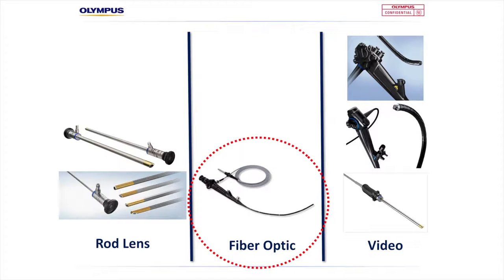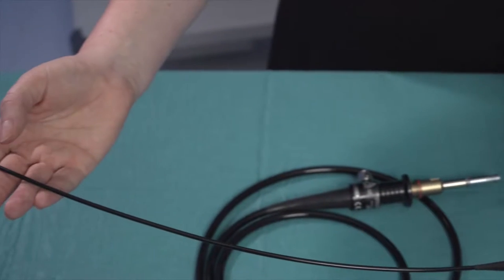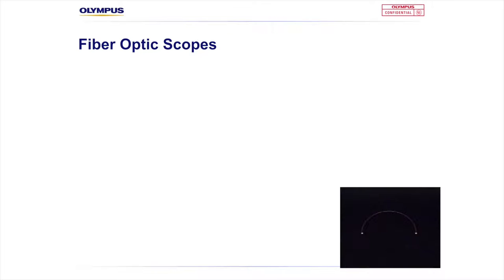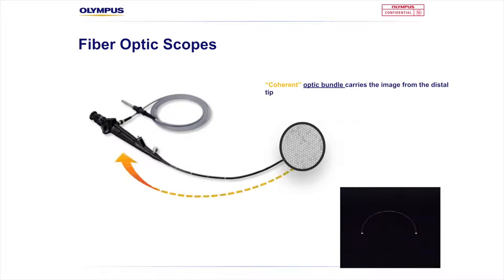A rod lens or rigid telescope might not be suitable to access these cavities during more minor procedures, especially where heavy anaesthetic is not warranted. This brings me to the second type of scope: fibre optic. Fibre optic endoscopes allow clinicians to use a flexible instrument to navigate and view patient tissues. Fibre optic scopes use a fibre optic bundle to transport the image instead of rod lenses. This fibre optic bundle is different from the bundle that carries light in light guides — it carries the image in fibrescopes and is called the optic bundle.